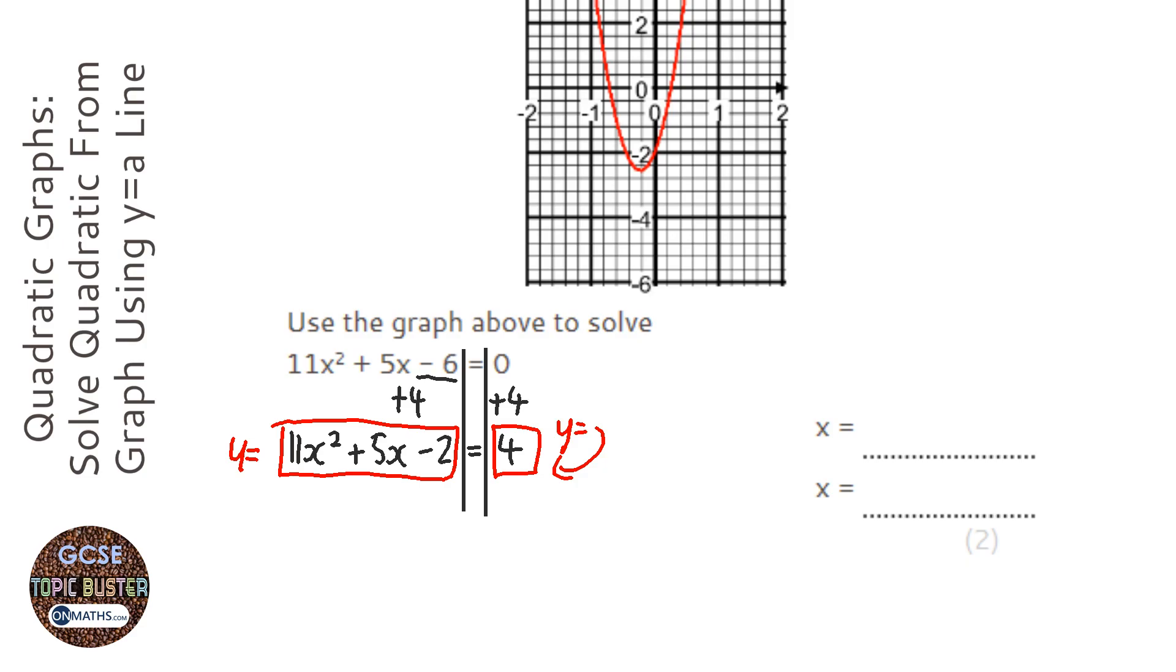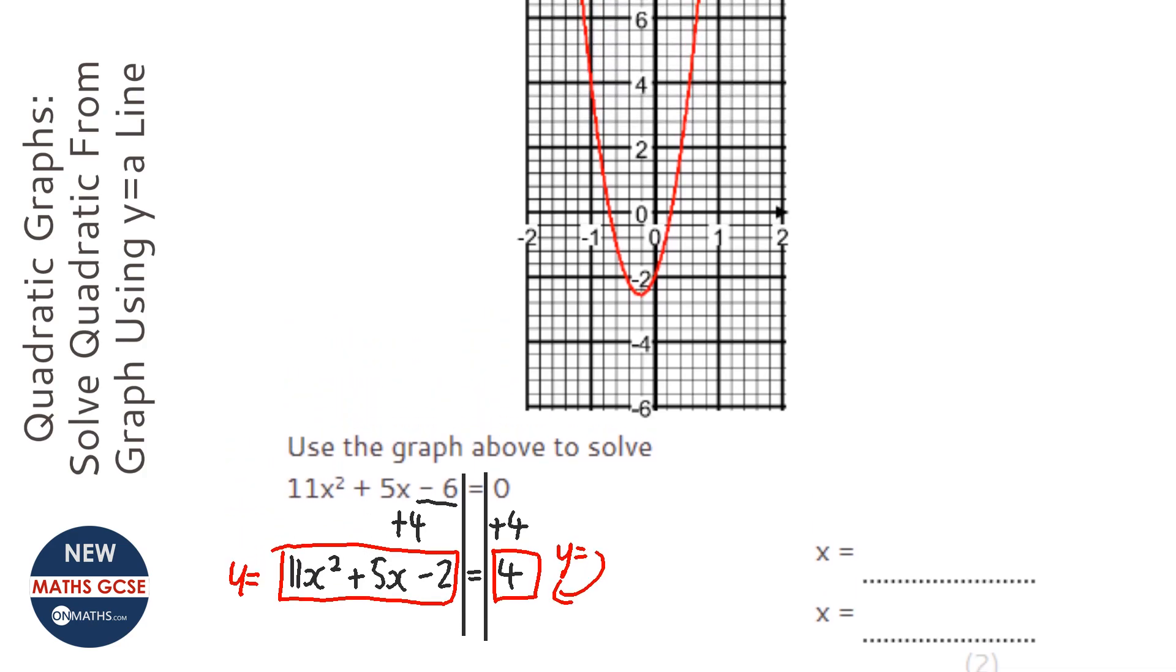And it's where the two graphs intersect. Now we've already had that quadratic, the one on the left, drawn for us, so we just need to draw the other one, which is y equals 4.